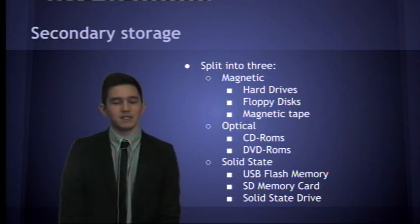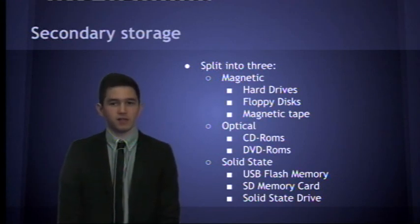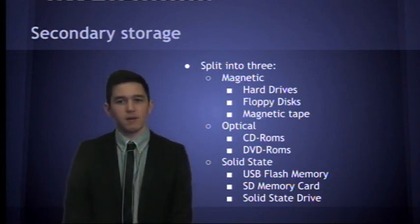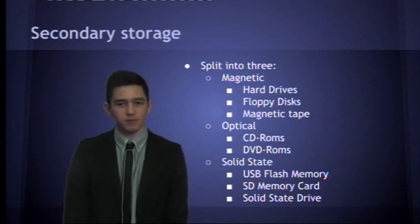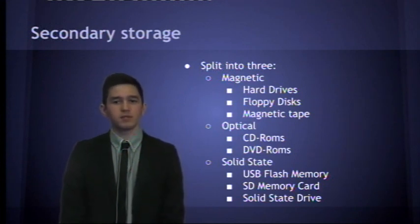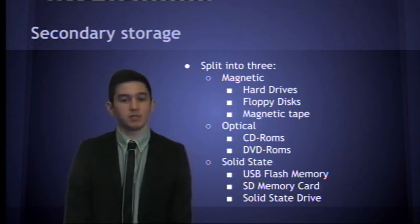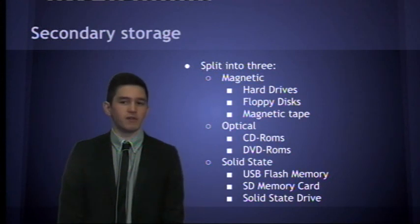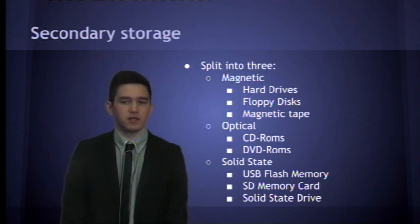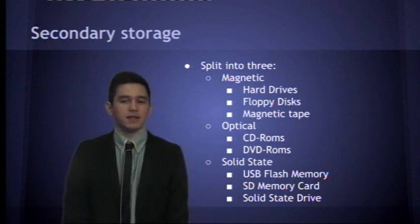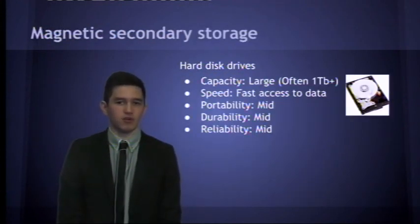Secondary storage can be split into three different sections. Magnetic — for example, hard drives, floppy disks, magnetic tape. Optical — CD-ROMs, DVD-ROMs. And solid state — USB flash memory, SD cards, and solid state drives.